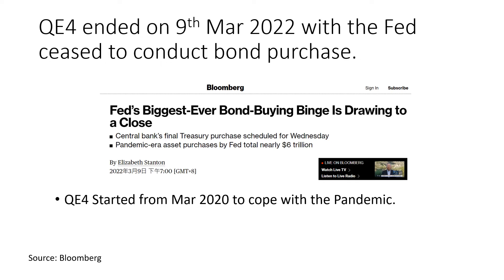On the other hand, when we say that the Fed started to do quantitative tightening — sometimes the market refers to that as reducing the balance sheet, or shrinking of the balance sheet — that's a different story, which is likely to take place in May this year. When they start doing quantitative tightening, it means they are going to start pulling back the liquidity that has been injected into the market; i.e., they will start selling the bonds that were previously purchased and pull back the liquidity. Those are two different concepts you have to be aware of.